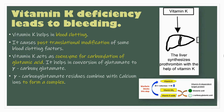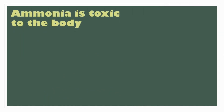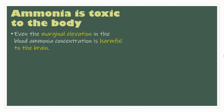These gamma-carboxyglutamate residues combine with calcium ions to form a complex. This complex binds to the platelet membrane and helps in the conversion of prothrombin to thrombin. Moving to the next statement: ammonia is toxic to the body. Even a marginal elevation in blood ammonia concentration is harmful to the brain.